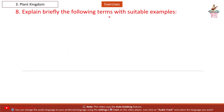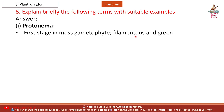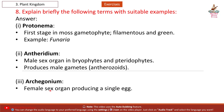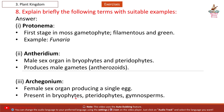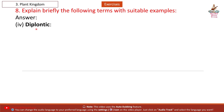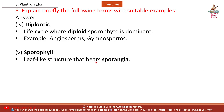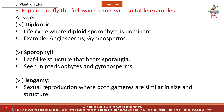Question 8: Explain briefly the following terms with suitable examples. Answer: (1) Protonema — first stage in moss gametophyte, filamentous and green. Example: Funaria. (2) Antheridium — male sex organ in bryophytes and pteridophytes, produces male gametes (antherozoids). (3) Archegonium — female sex organ producing a single egg, present in bryophytes, pteridophytes, and gymnosperms. (4) Diplontic — life cycle where diploid sporophyte is dominant. Example: angiosperms, gymnosperms. (5) Sporophyll — leaf-like structure that bears sporangia, seen in pteridophytes and gymnosperms. (6) Isogamy — sexual reproduction where both gametes are similar in size and structure. Example: Spirogyra.